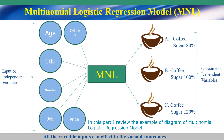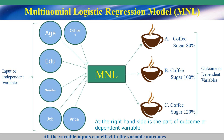In this part, I reviewed the example of the diagram of the multinomial logistic regression model. At the left hand side is the path of the independent variable or input. At the right hand side is the path of the outcome or dependent variable. All the variable inputs can apply to the variable outcome.